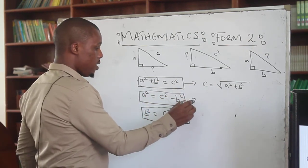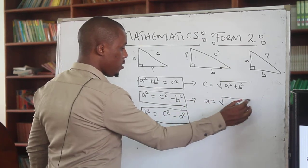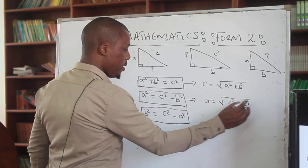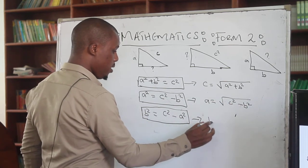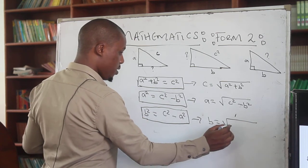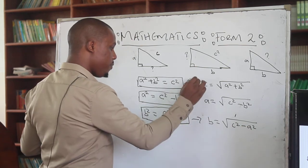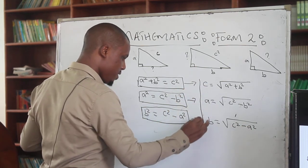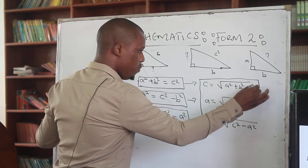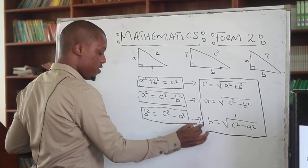Same case for A: A is going to be given by the square root of C squared minus B squared. Then finally, for B, it is going to be the square root of C squared minus A squared. So this theorem arrives at these three cases, and we are going to be using them in solving problems and also in our day-to-day situations.